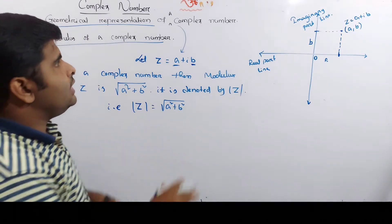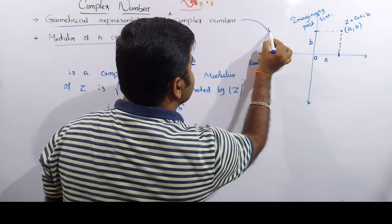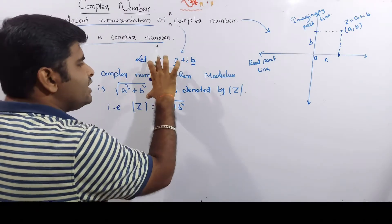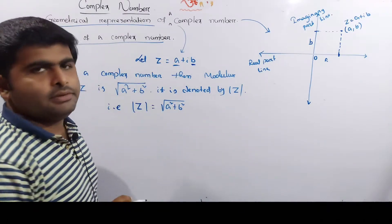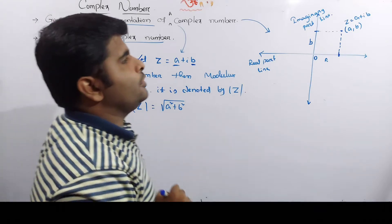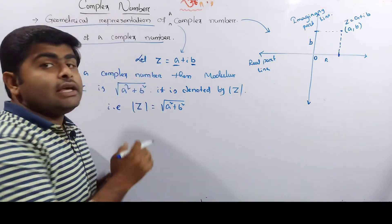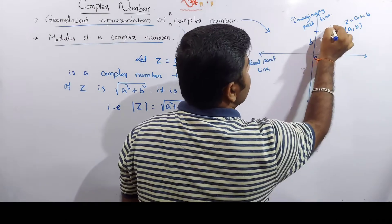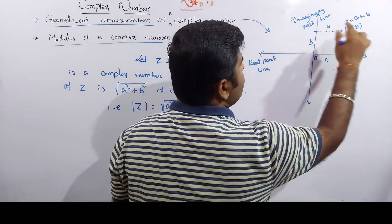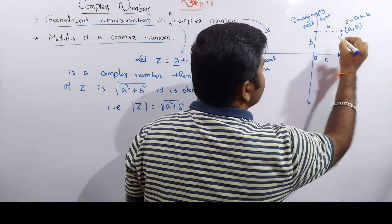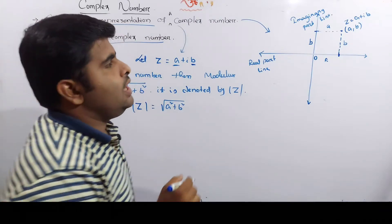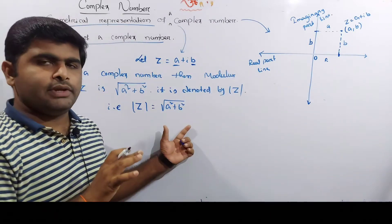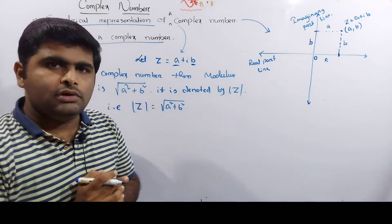So first of all, let me represent this clearly. We know that this length is a, and this length is b. The length from the origin to the point is the modulus of z. If you have length a along the real axis and length b along the imaginary axis, that gives you the modulus of z.